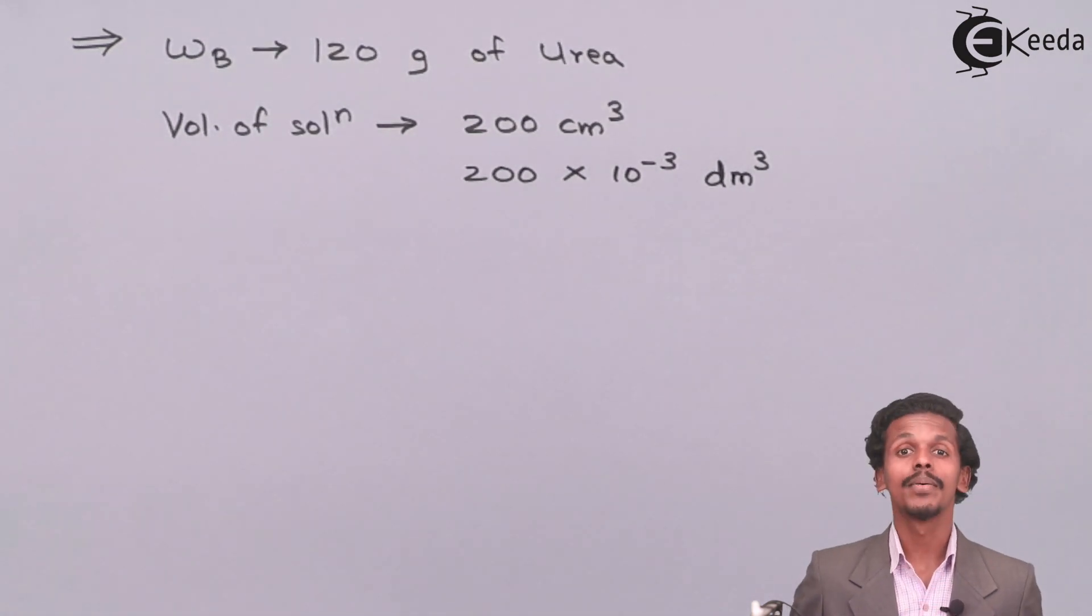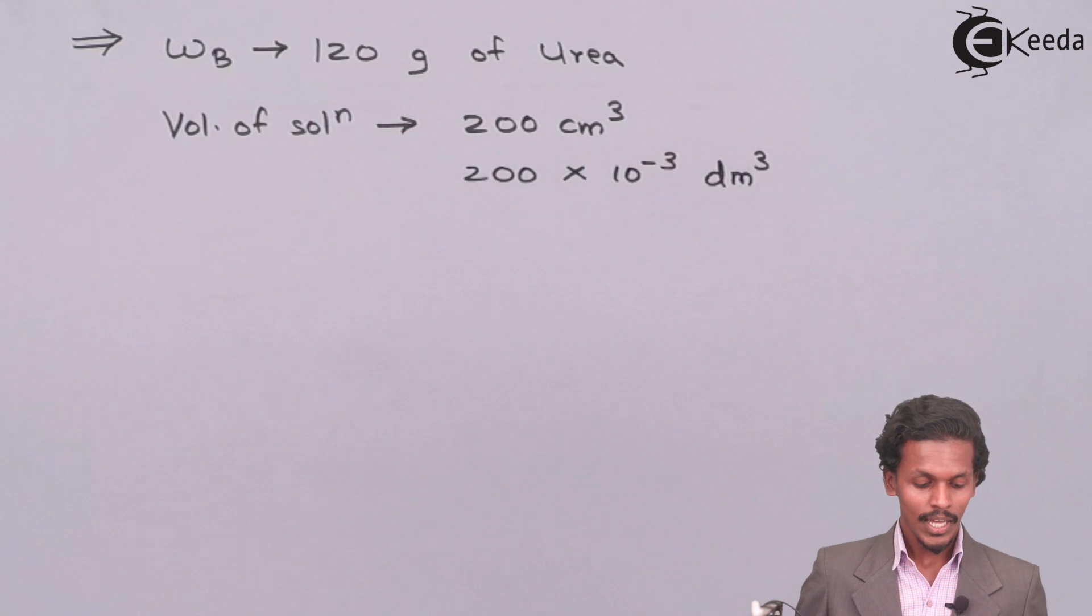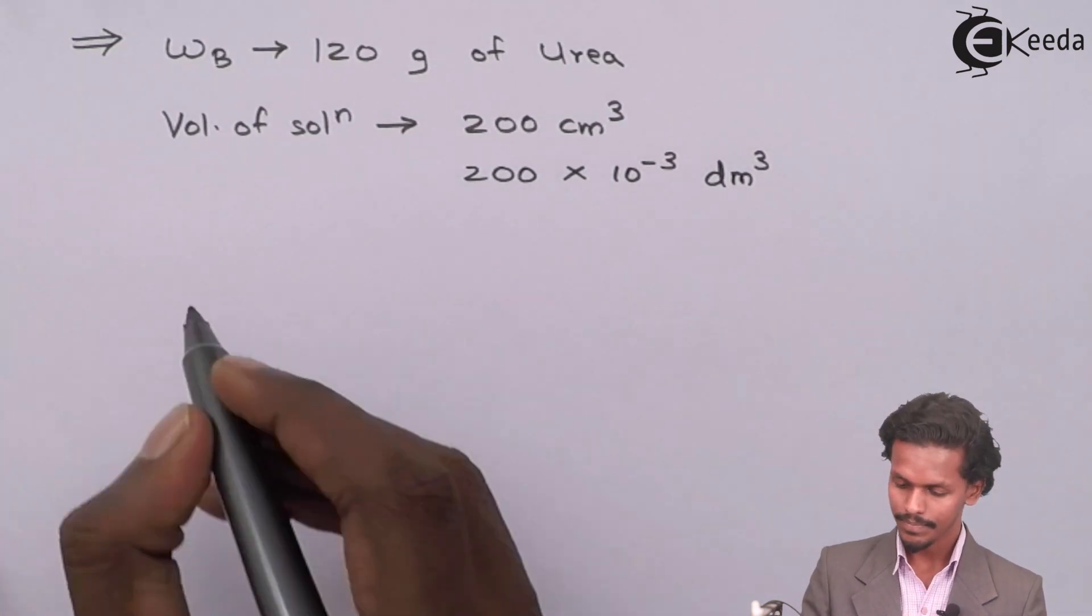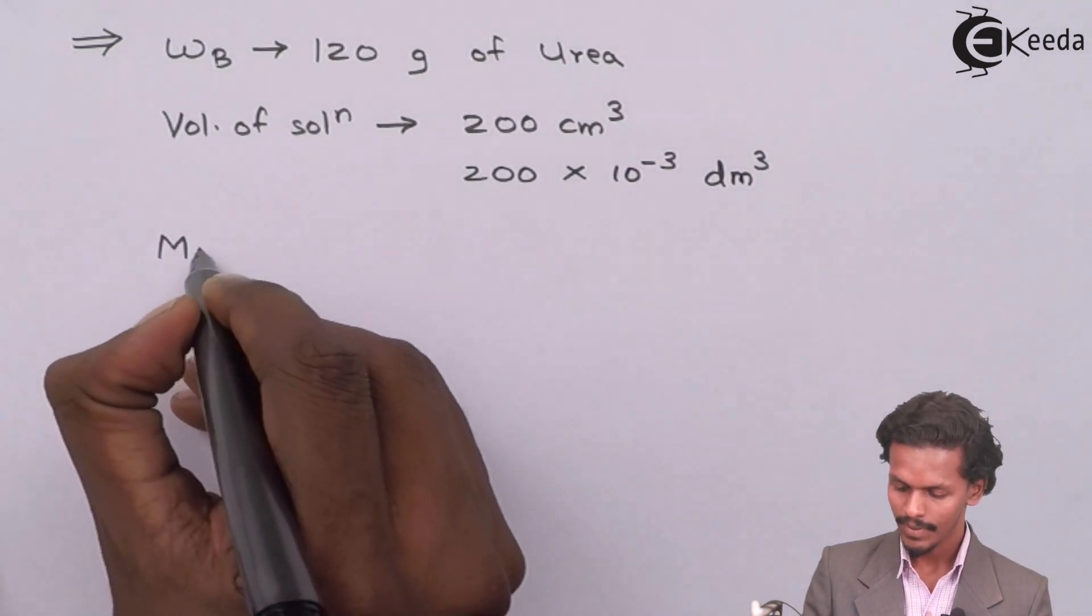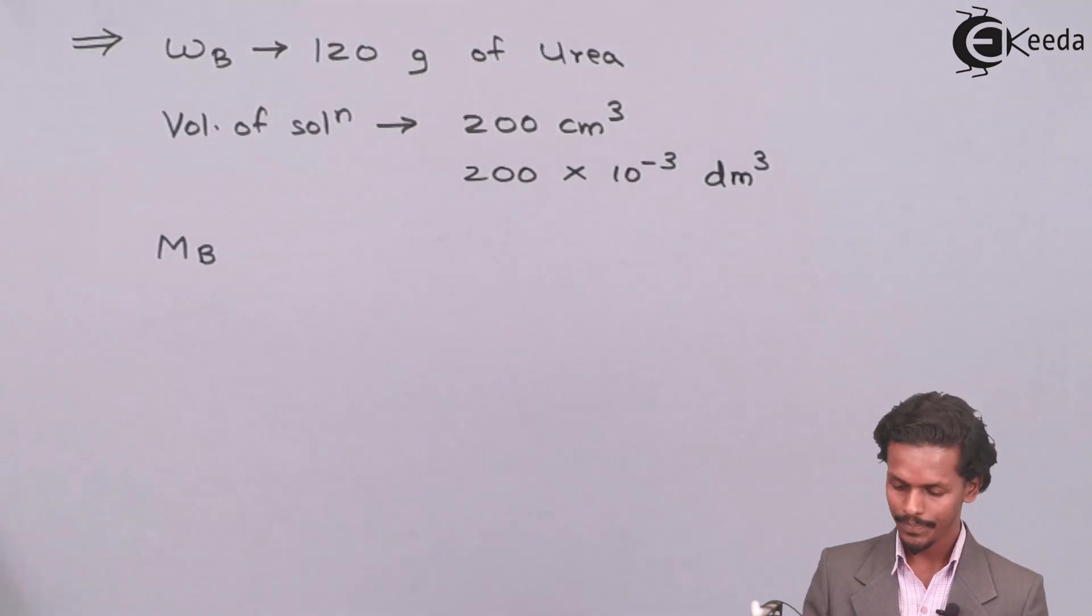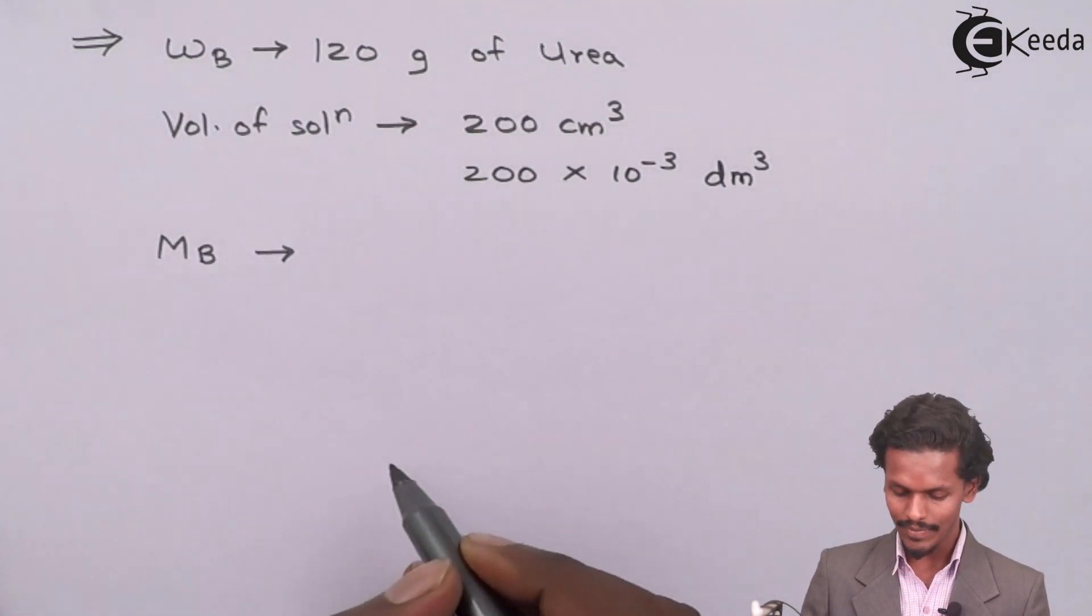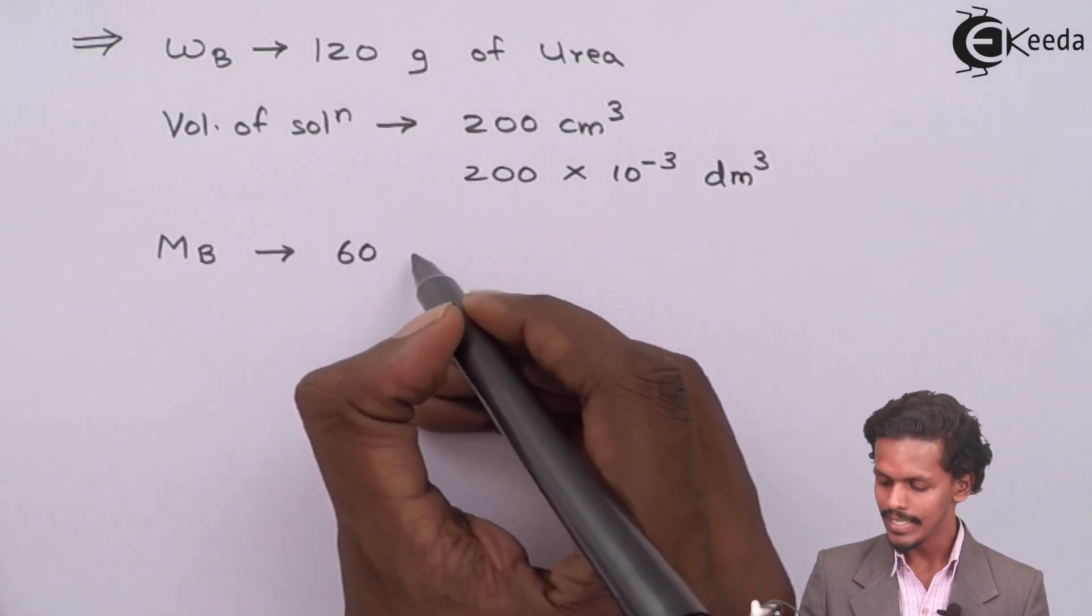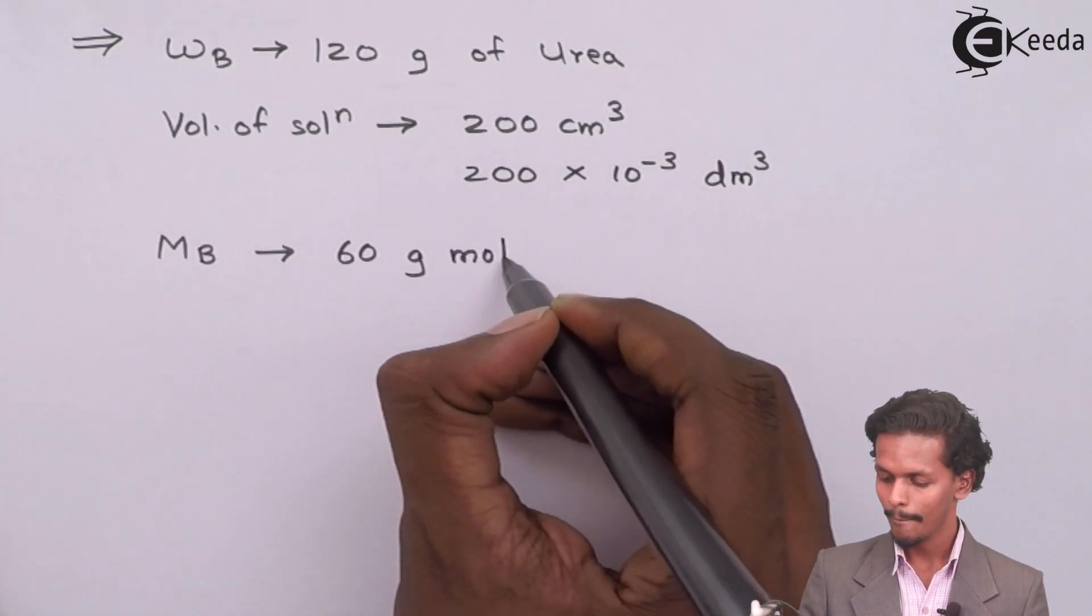Now we have one more given detail, that is the molecular weight of urea. Since it is a solute, I have written it as MB. So MB is given as 60 grams per mole.